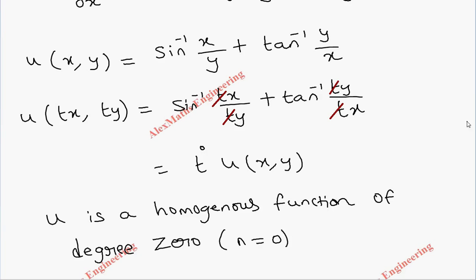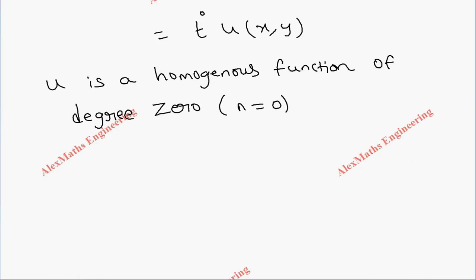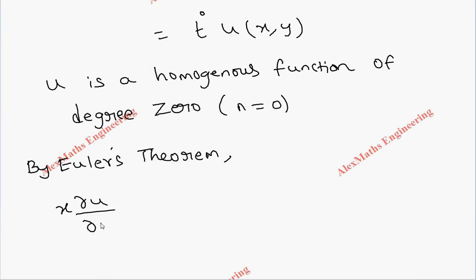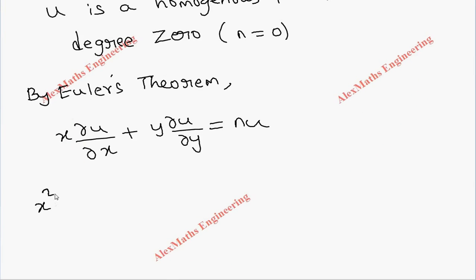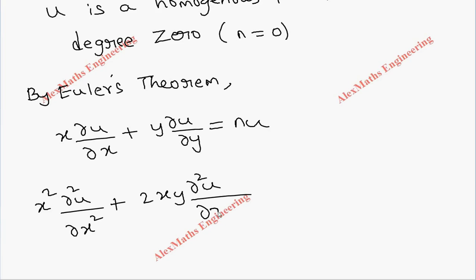Then by Euler's theorem we get two statements. The first one is: x times ∂u/∂x plus y times ∂u/∂y equals n·u. The second order statement is: x² times ∂²u/∂x² plus 2xy times ∂²u/∂x∂y plus y² times ∂²u/∂y².